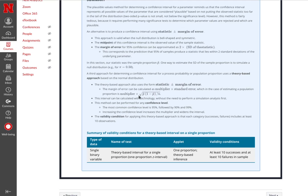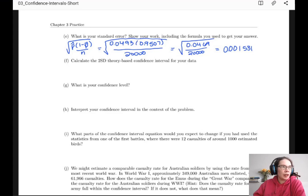And if you work out that top part, you get 0.0469 over 20,000, and that is 0.001531. So I wrote all that out and hadn't switched back to that screen, so sorry about that.